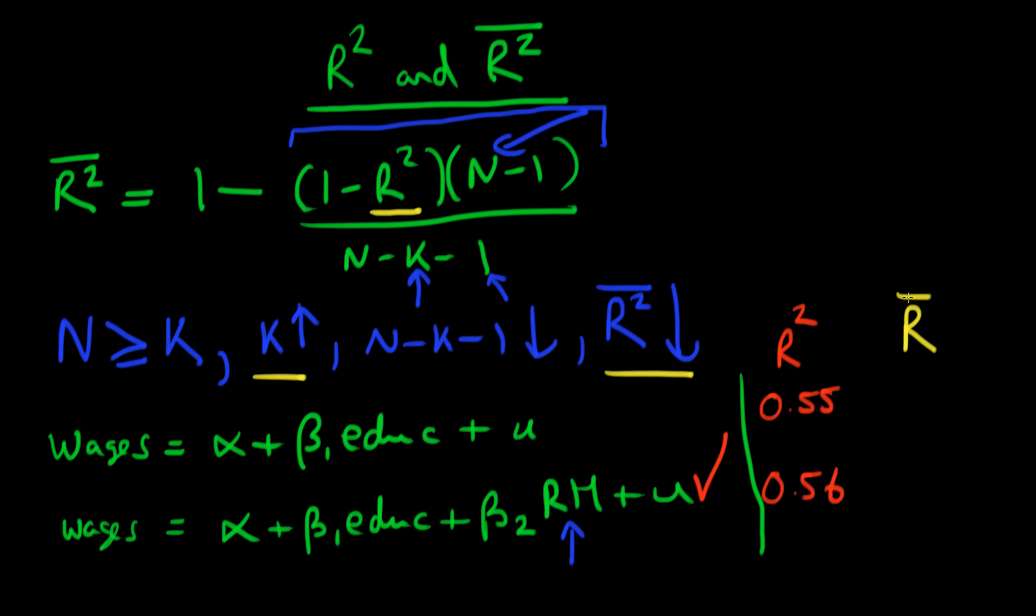So enter R-bar squared, or adjusted R-squared. Perhaps R-bar squared in my first model might be something like 0.5. But when I add the extra variable, as opposed to R-squared, R-bar squared may actually fall or will probably fall to 0.4 or something like that.